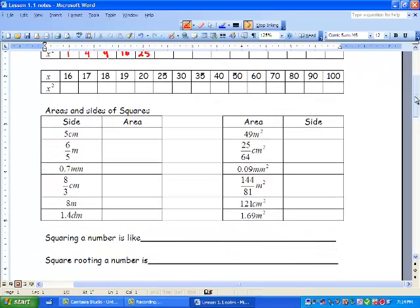Areas and sides of squares. We have a side of five centimeters. So let's draw our little square here. If this is five and this is five centimeters, our area is the space inside, and we just go five times five. So it's 25 centimeters squared. And we have to make sure we have that square in there because it's 2D. It's a flat surface.